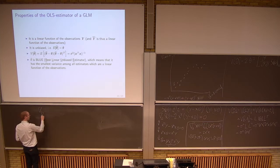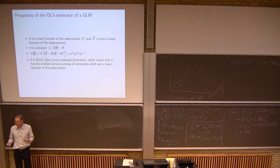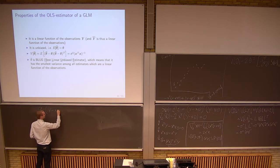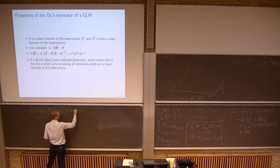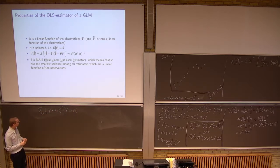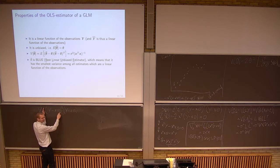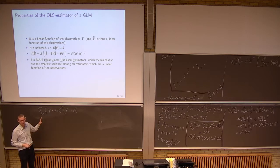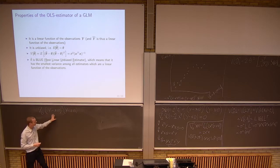What we have to do is differentiate with respect to theta, and what we have to differentiate is (y minus x theta) transpose times (y minus x theta). Now, we know that this inner product gives us a scalar — keep that in mind. Basically what we do is differentiate a product, which we can do in many ways.